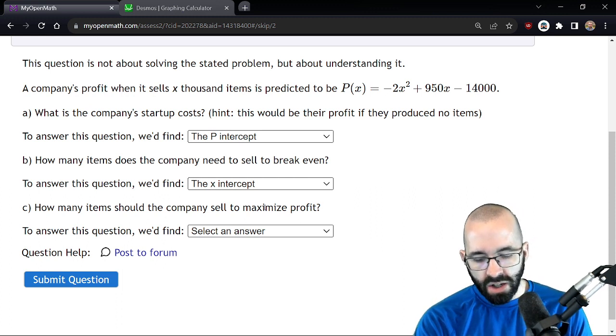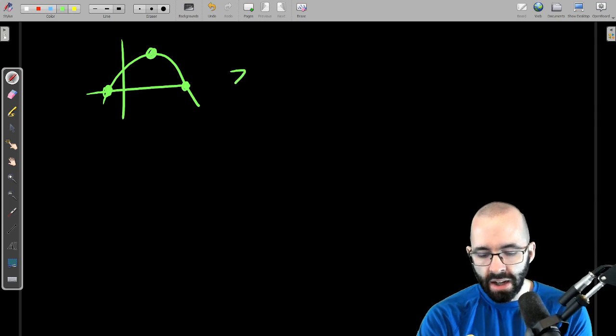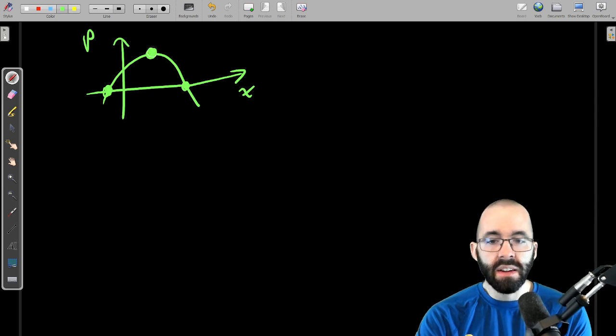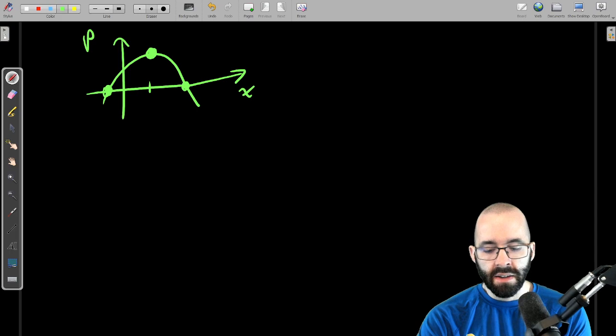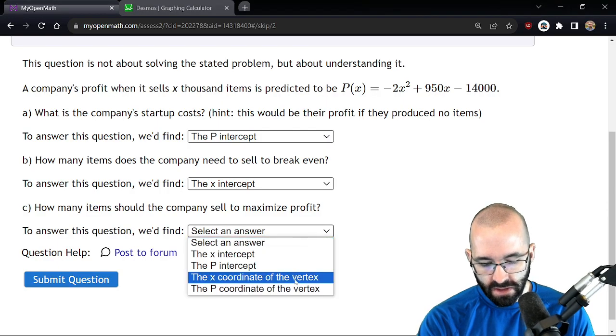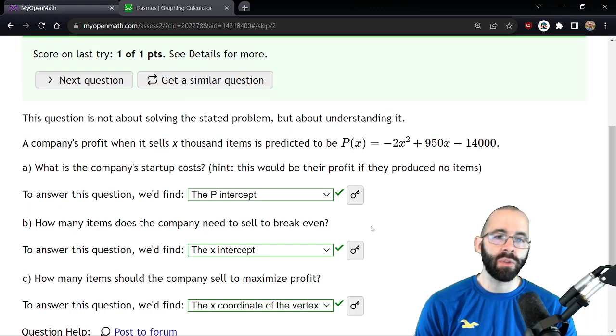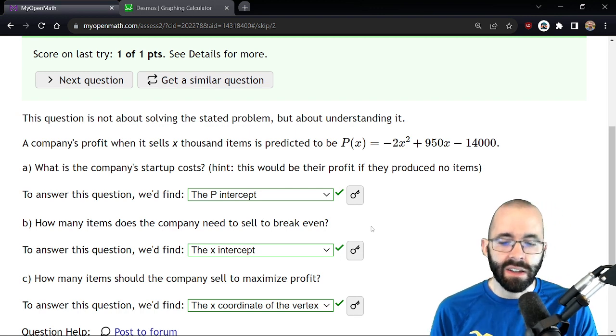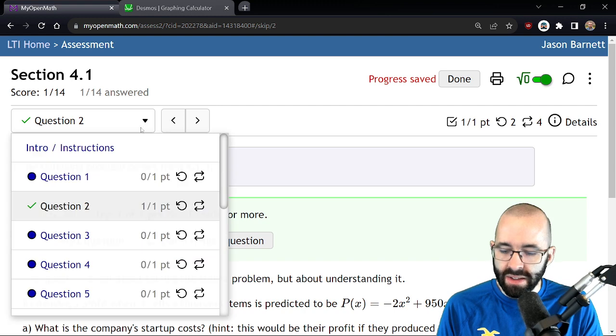So this will be the x intercept, this is the break even point. How many items should the company sell to maximize profit? Well the maximum profit, again this is x, this is P, maximum profits here. To determine how many items they need to sell, that's going to be the x coordinate of that vertex. So these are kind of tricky sometimes but really good to wrap your head around tying in the application with the theory. I wanted to look at this one together, we didn't really do one of these in the rest of the videos.